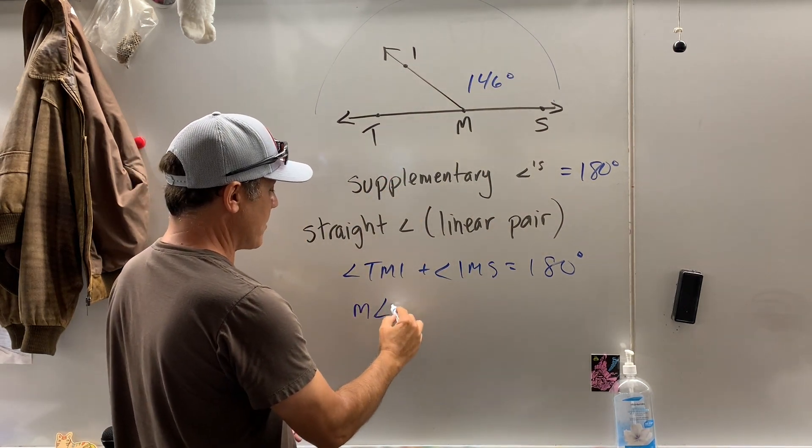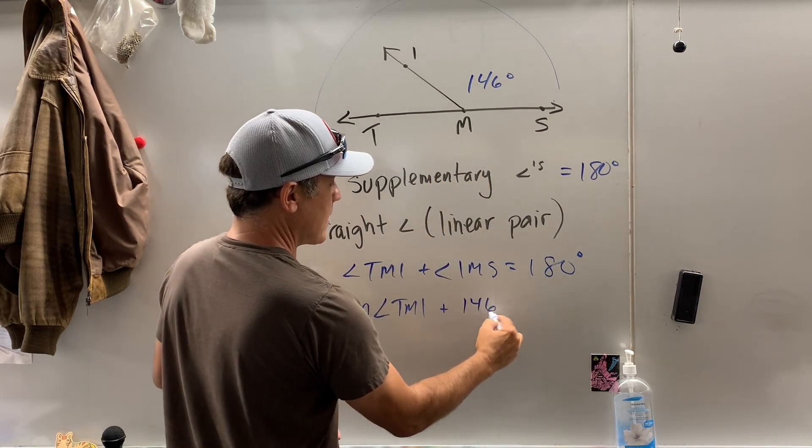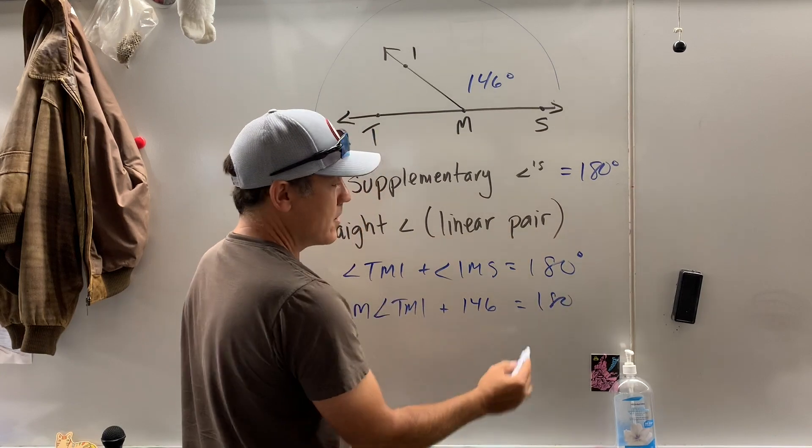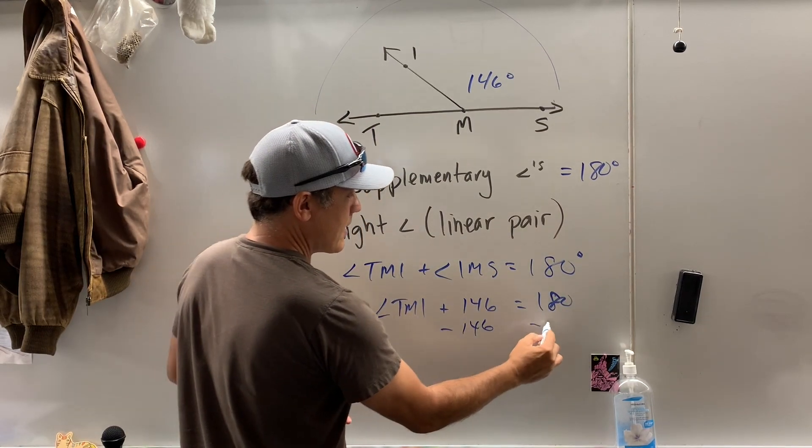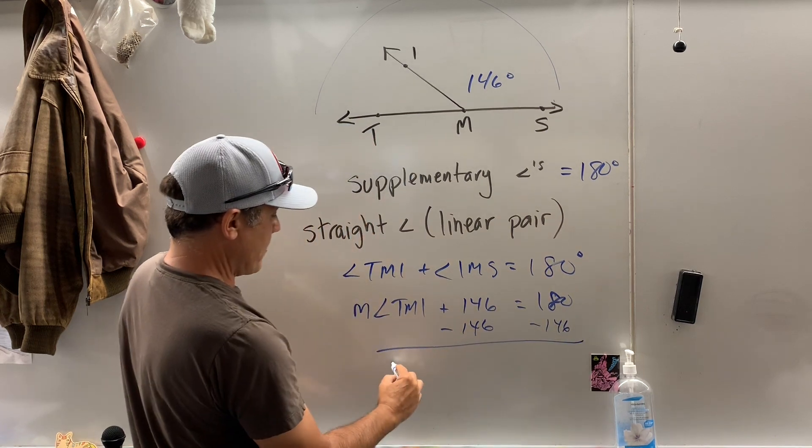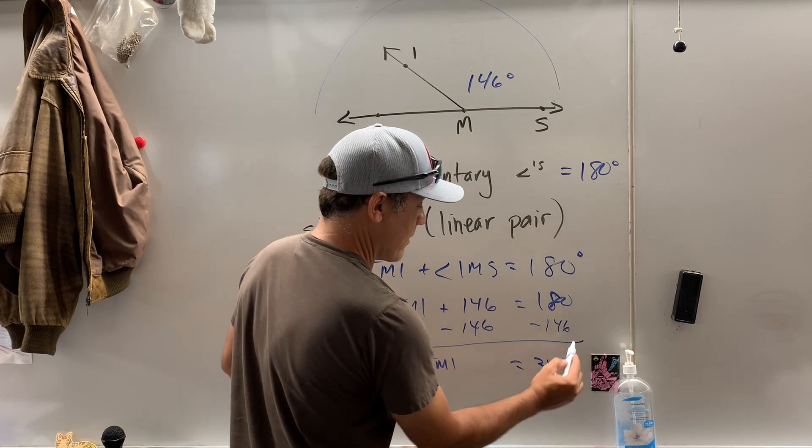So we could find the measure of TMI plus, instead of IMS, we're going to say 146, that equals 180. We'll have this solve, just subtract 146, and what do we got? The measure of angle TMI equals 34 degrees.